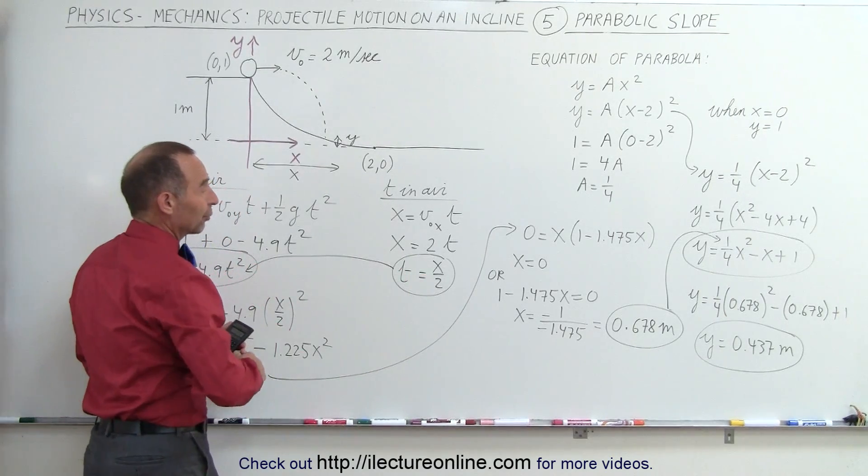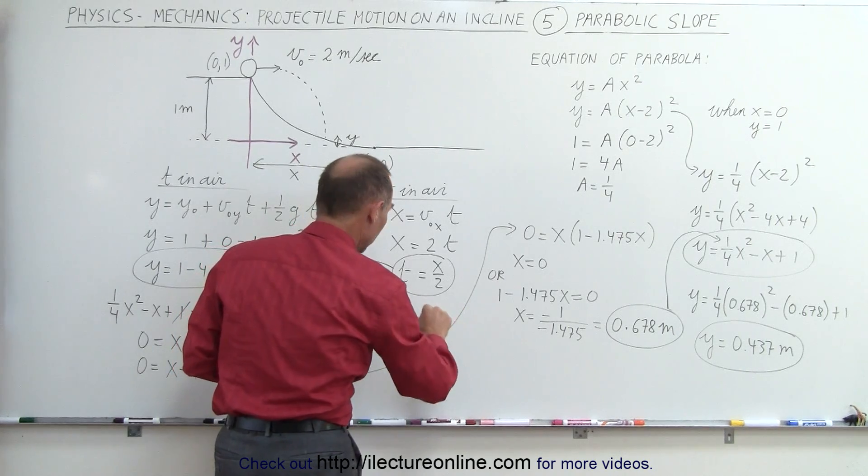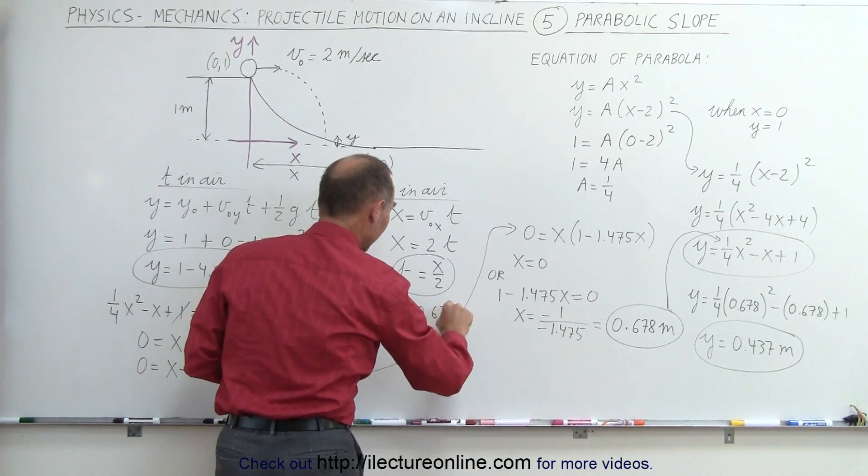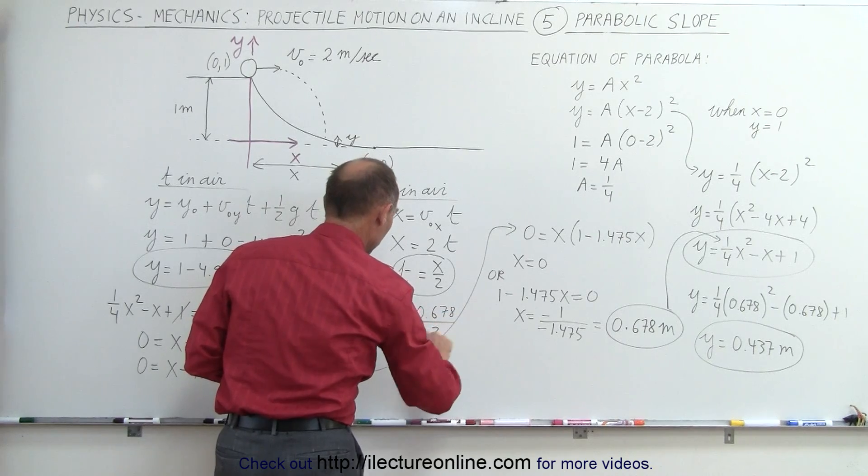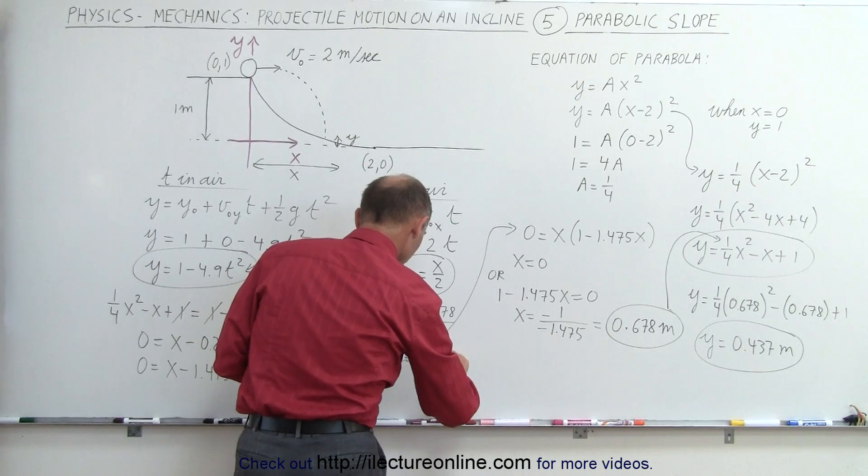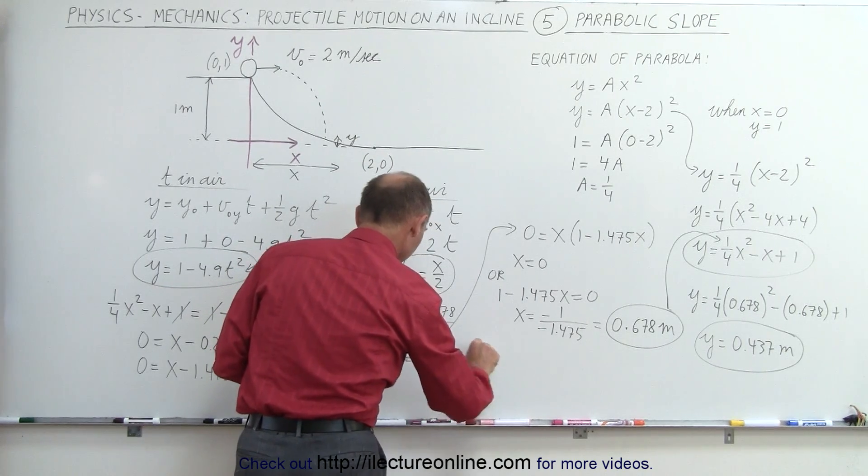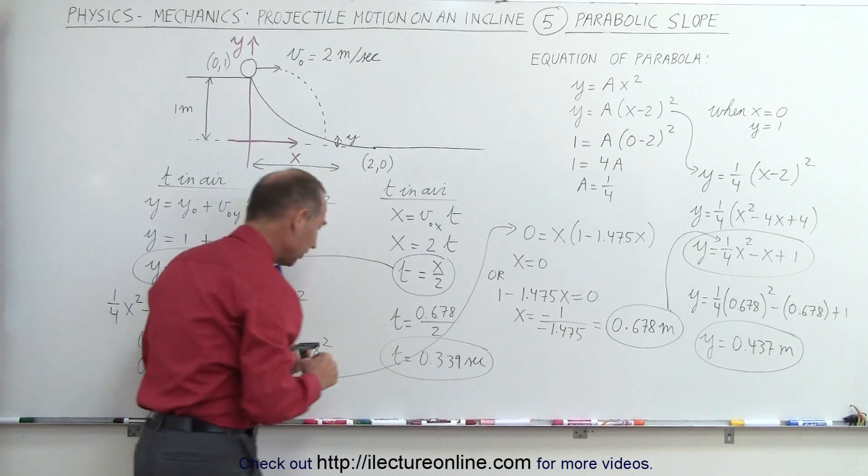how long does it take to get there, and of course you plug in a value for x, you say that time is equal to 0.678 divided by 2. And so time is equal to, well, that would be 0.339 seconds.